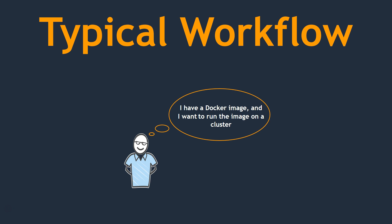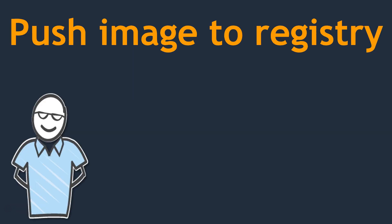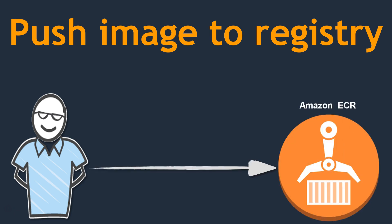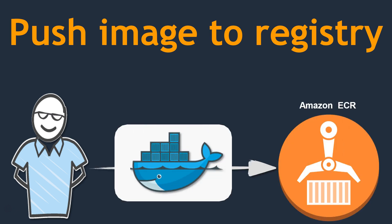Assume a scenario like this: you are a developer and you have a Docker image and you want to run that Docker image into a container management system or a cluster. In Amazon terms, it is an Elastic Container Service. So you have a simple image and you need to run it in the cluster. As a developer, you create the image and push it into a registry — in this case, your EC2 Container Registry. Once you push this, the image can be pulled by other people, your deployment team, or your ops team to run it in a cluster.